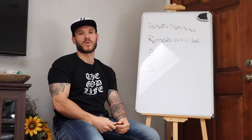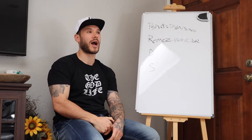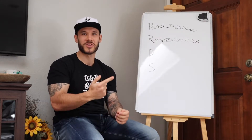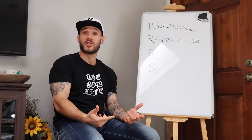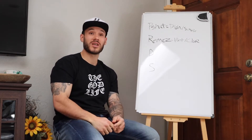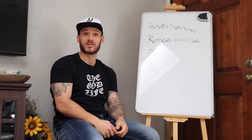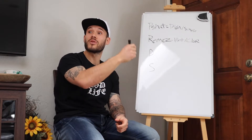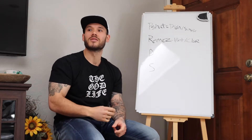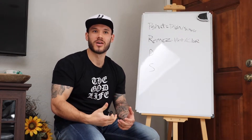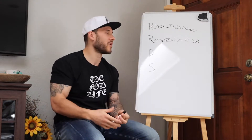Gematria is used all throughout the New Testament. An example that every single Christian — and even non-Christian — has heard of is the man whose number is 666. In Revelation 13, it says 'he who has wisdom will understand these things — the number of his name is 666.' He's giving us Gematria, saying unless you know these things you're not going to understand what we're talking about.